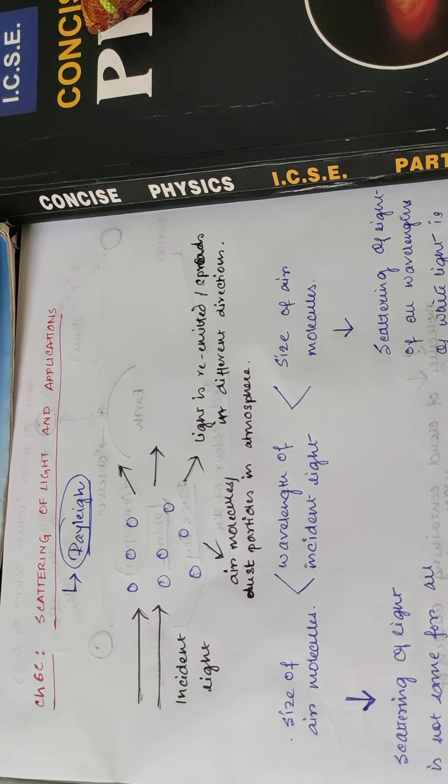Now there are two cases. First, if the size of the air molecules or dust particles in the atmosphere is greater than the wavelength of the incident light, then they scatter all the wavelengths of white light to the same extent. That means the scattering is the same — how much red light is scattered and how much violet light is scattered will all be the same.